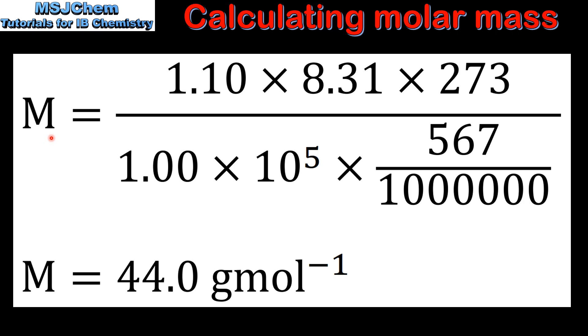So here we have the same equation with the values substituted in. The mass of the gas is 1.10 grams. The universal gas constant is 8.31 joules per Kelvin mole. The temperature in Kelvin at STP is 273. The pressure of a gas at STP is 1.00 times 10 to the 5 Pascals. And to convert from centimeters cubed to meters cubed we divide the value in centimeters cubed by 1 million. This gives us a molar mass of 44.0 grams per mole.